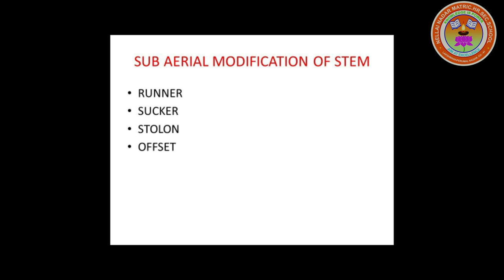In sub-aerial modification of stem, the stem is partly aerial and partly underground. Short aerial branches and adventitious roots develop at the node. Detachment of an entire branch or a node can develop into a new plant. The plants are commonly known as creepers. The weak sub-aerial stems are modified into four types: Runner, Stolon, Sucker, and Offset.